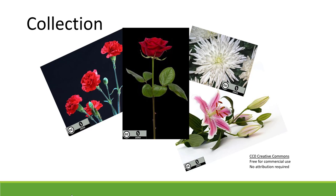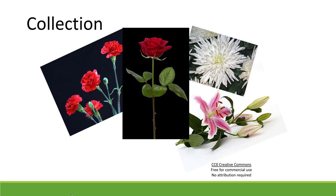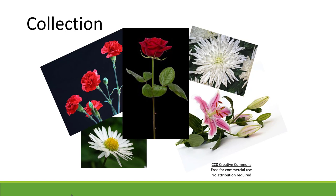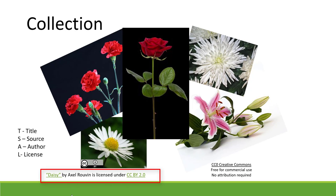I looked a little closer at the original picture and found that I missed a daisy. So back to the search engine, hunting for a daisy. Again, with Picabay, I was able to find a daisy. This particular one is a CC BY, which means there has to be attribution. In the attribution, you should have the title, the source, the author, and the license. And this is the attribution for the daisy in my collection.